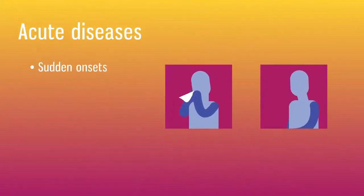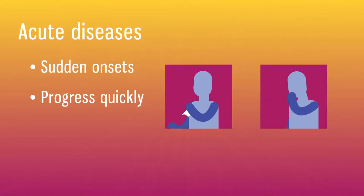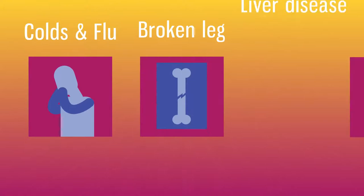Acute diseases have sudden onsets and progress quickly. Treatments include taking drugs and or surgery. Examples of acute diseases are colds, flu, a broken leg, or liver disease.